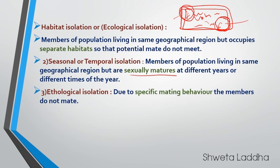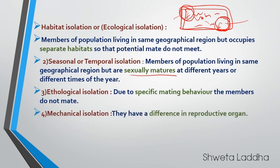Third is ethological isolation — it is due to specific mating behavior. Mating behaviors are different and therefore they do not mate with each other. Fourth is mechanical isolation — they have differences in their reproductive organs and therefore cannot mate with each other. So habitat isolation, seasonal or temporal isolation, ethological isolation, and mechanical isolation are four types of pre-mating or pre-zygotic isolating mechanisms.